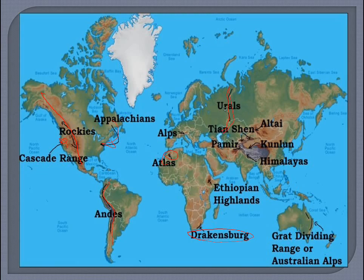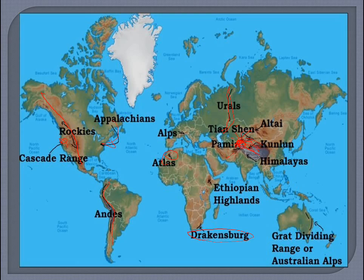The Drakensberg mountain is in South Africa. The Ural Mountains act as a natural boundary separating Europe and Asia. The Tian Shan and Altai mountains are in central Asia. The Pamir Knot is an important junction region in central Asia where the Himalayas, Tian Shan, Karakoram, Kunlun, Hindu Kush, and Suleiman ranges all converge. The Ethiopian Highlands and the Great Dividing Range, also known as the Australian Alps, are located in their respective eastern regions.